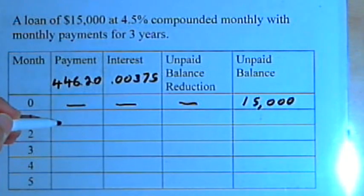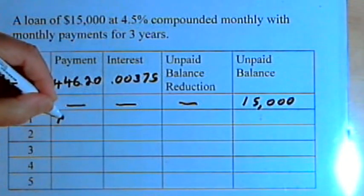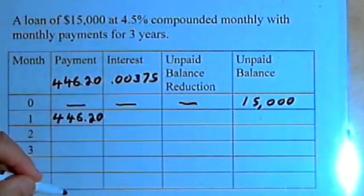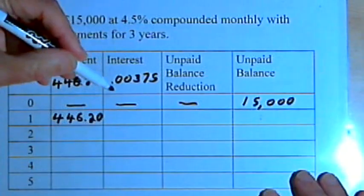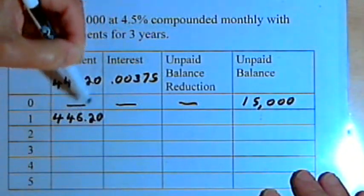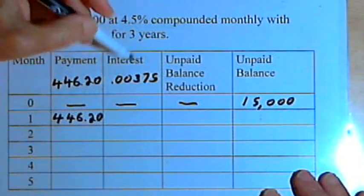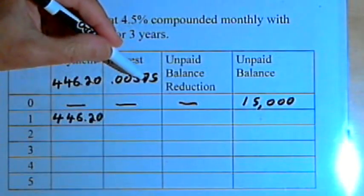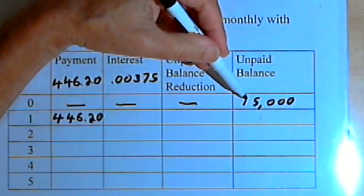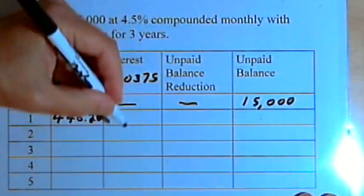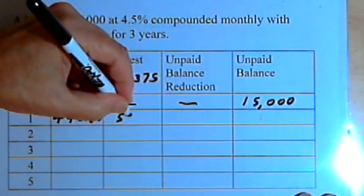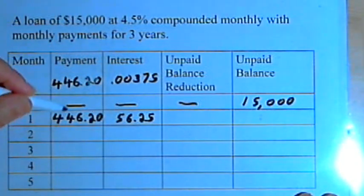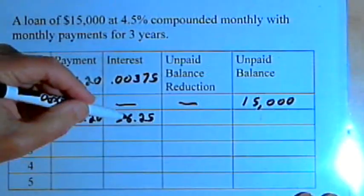At the end of the first month we have to make a payment. The payment is $446.20 — it's always going to be that amount. I want to figure out how much of that payment was interest. To do that I multiply the interest rate, 0.00375, times the unpaid balance. When I do that multiplication I get $56.25, so out of the payment, $56.25 was interest.